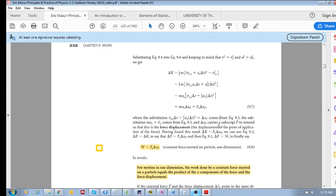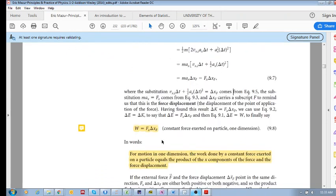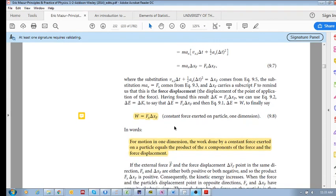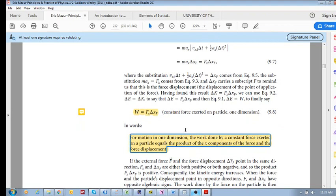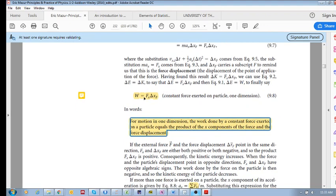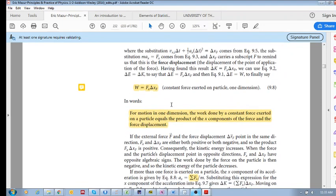So eventually, we come to this conclusion that the work done on a particle is equal to the force applied to that particle times the displacement. For motion in one dimension, the work done by a constant force exerted on a particle equals the product of the X components of the force and the force displacement. So work done is force times displacement.